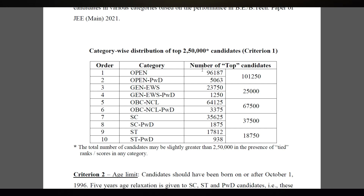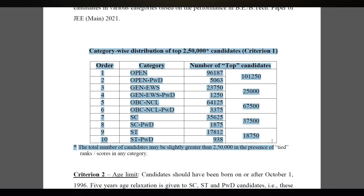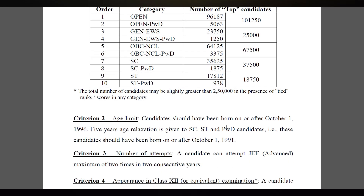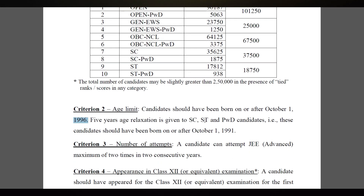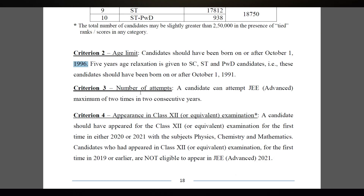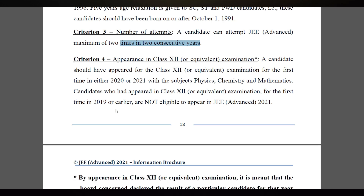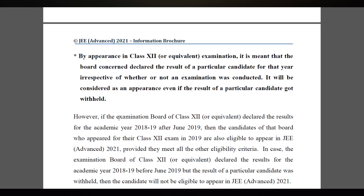This year's category-wise distribution of the top 2,50,000 students is shown here. For age limit, candidates should be born on or after October 1st, 1996, with a 5-year relaxation for SC and ST. Criteria 3 is number of attempts — 2 consecutive years. For appearance in Class 12, it should be 2020 or 2021, meaning 2 consecutive years.